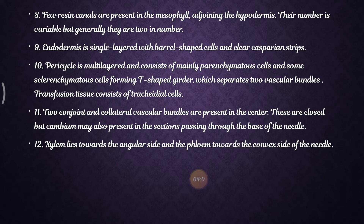There is transfusion tissue consisting of tracheid cells, and two conjoint and collateral vascular bundles are present in the center. These are closed; cambium may also be present in sections passing through the base of the needle. Xylem lies towards the adaxial side and phloem towards the convex side of the needle.